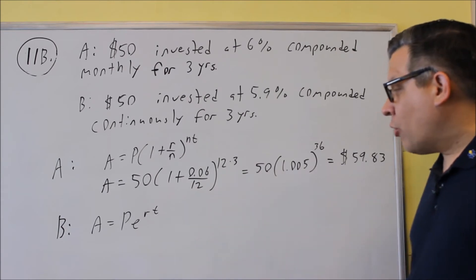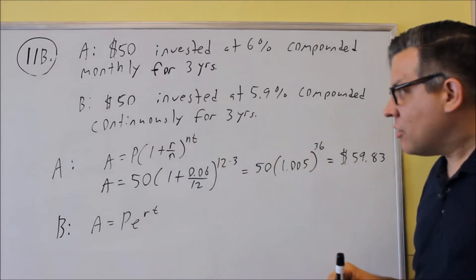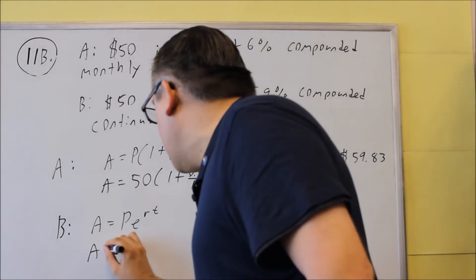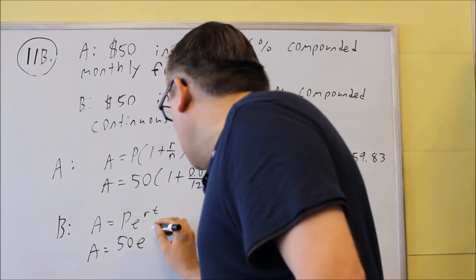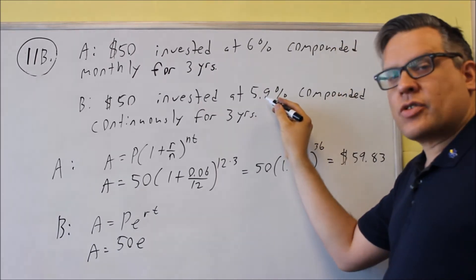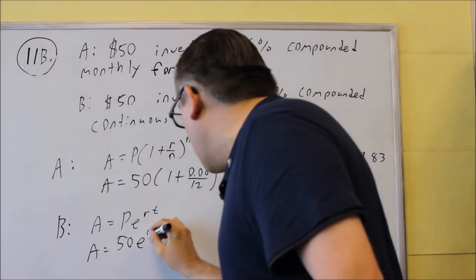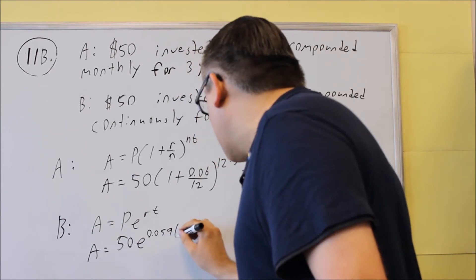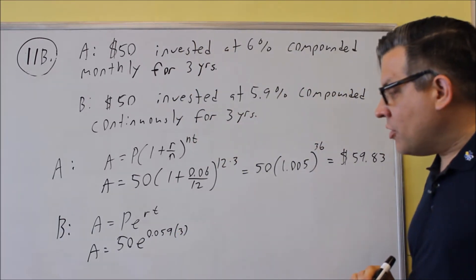For the next one, we have compounded continuously. So we're going to use 5.9%, so we're going to do A equals 50e. We're still going to move the decimal place over two places to the left, so we get 0.059, and then times 3. So that would be your setup.